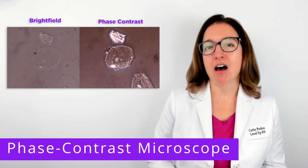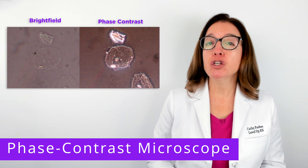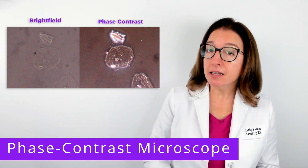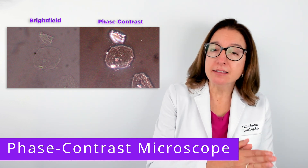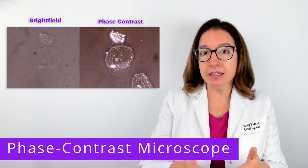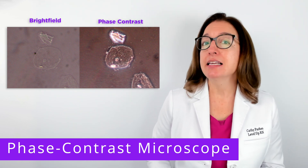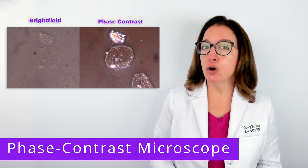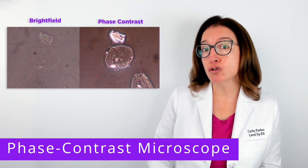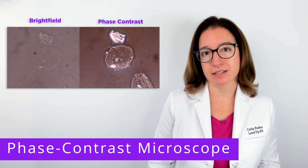Next, we have a phase contrast microscope, which uses a special condenser to split the light beam into direct and refracted light, which is then combined to create a high-contrast image. This type of microscope is useful for observing the internal structures of living, unstained organisms.